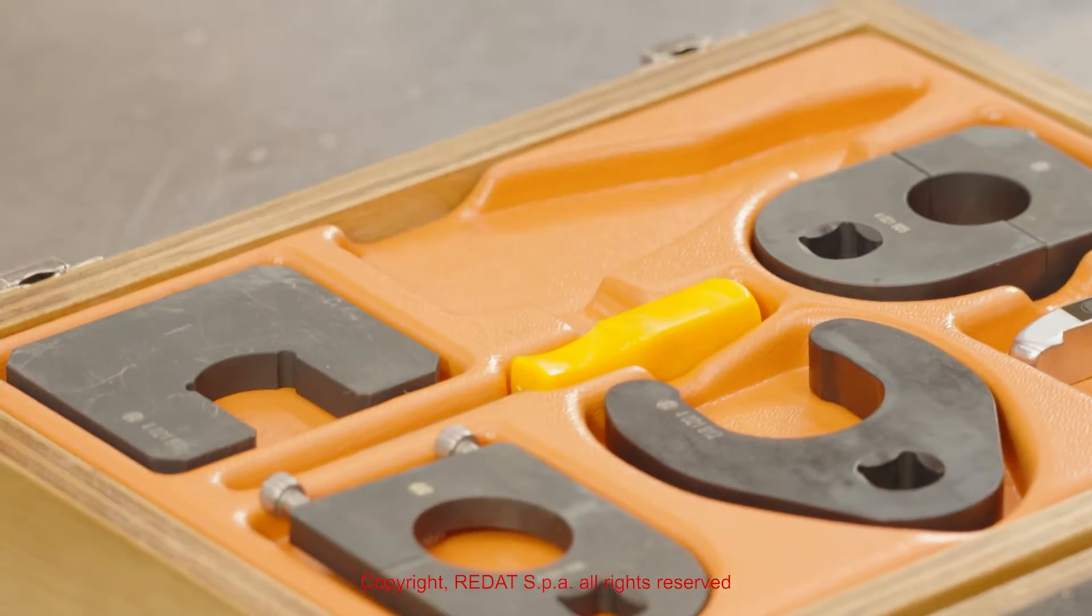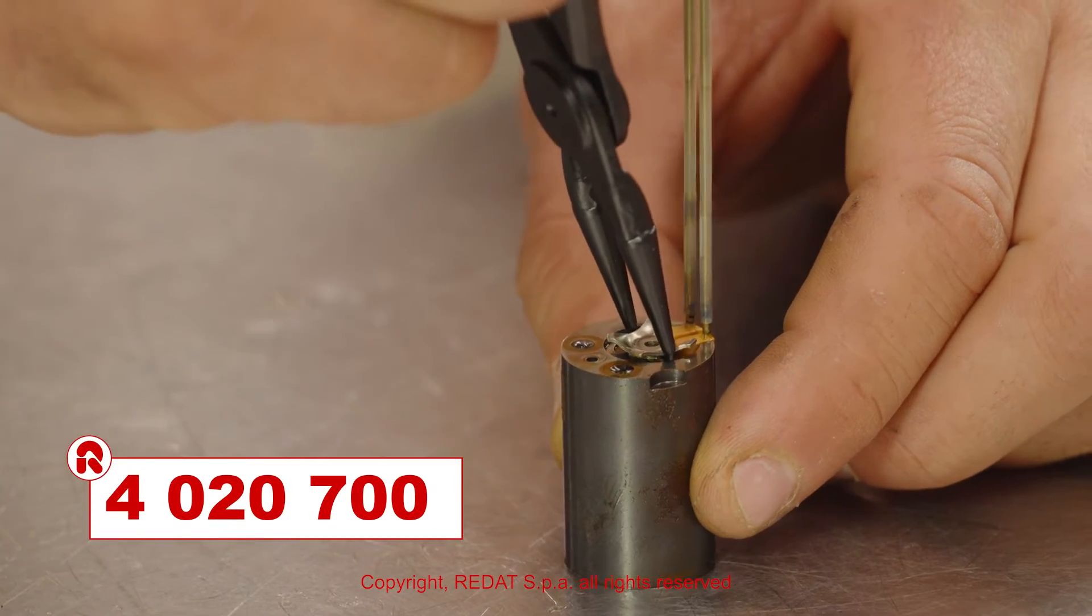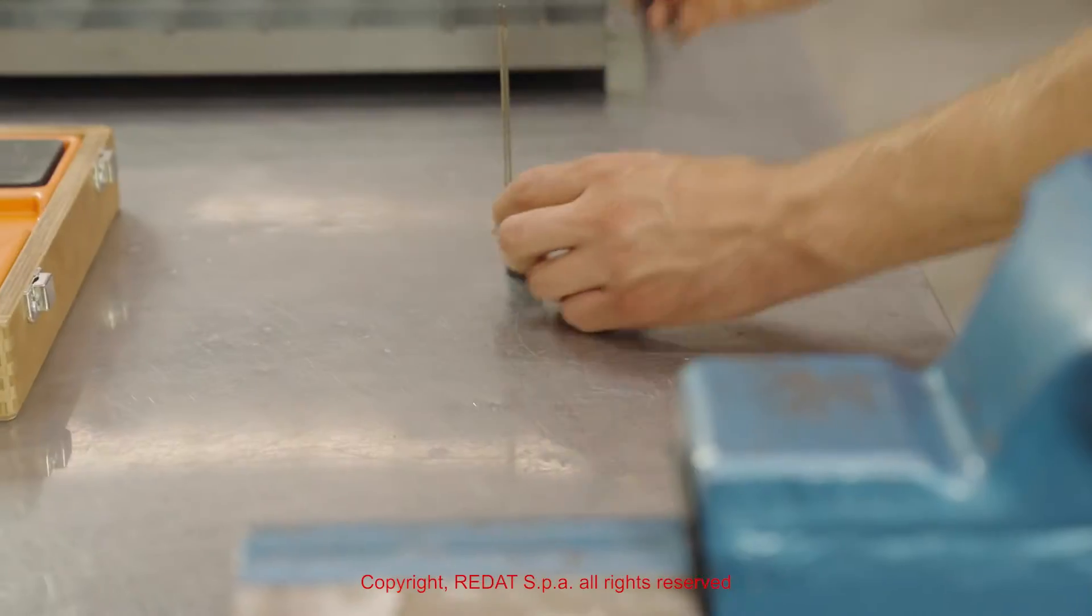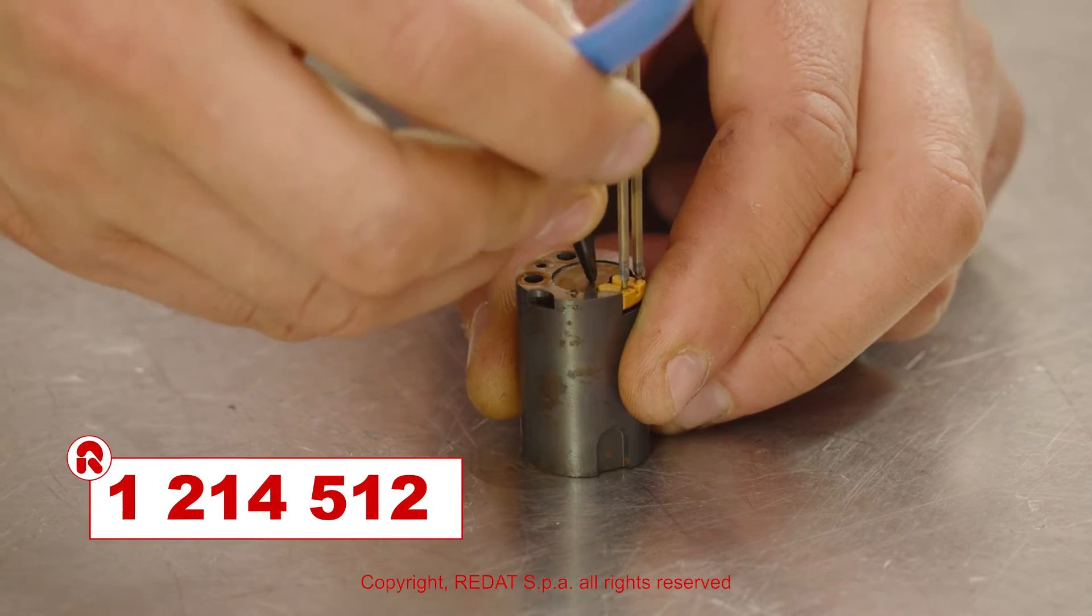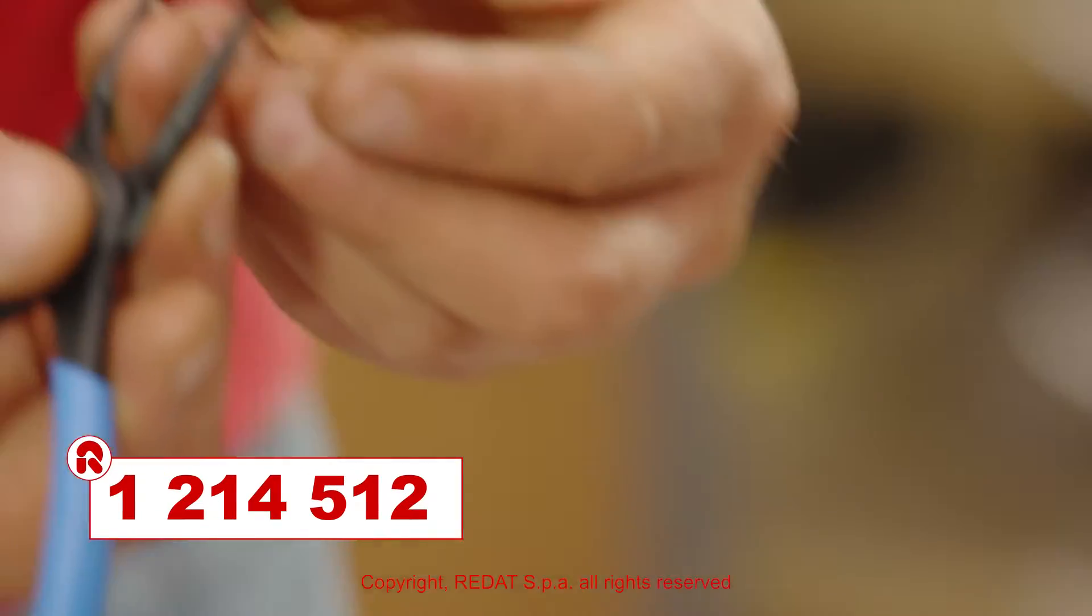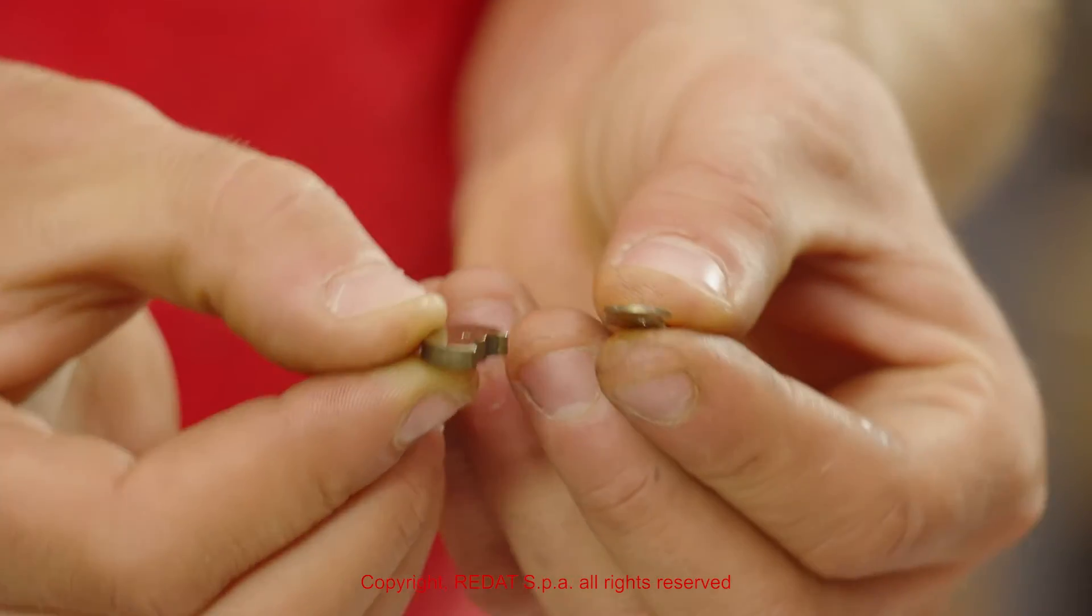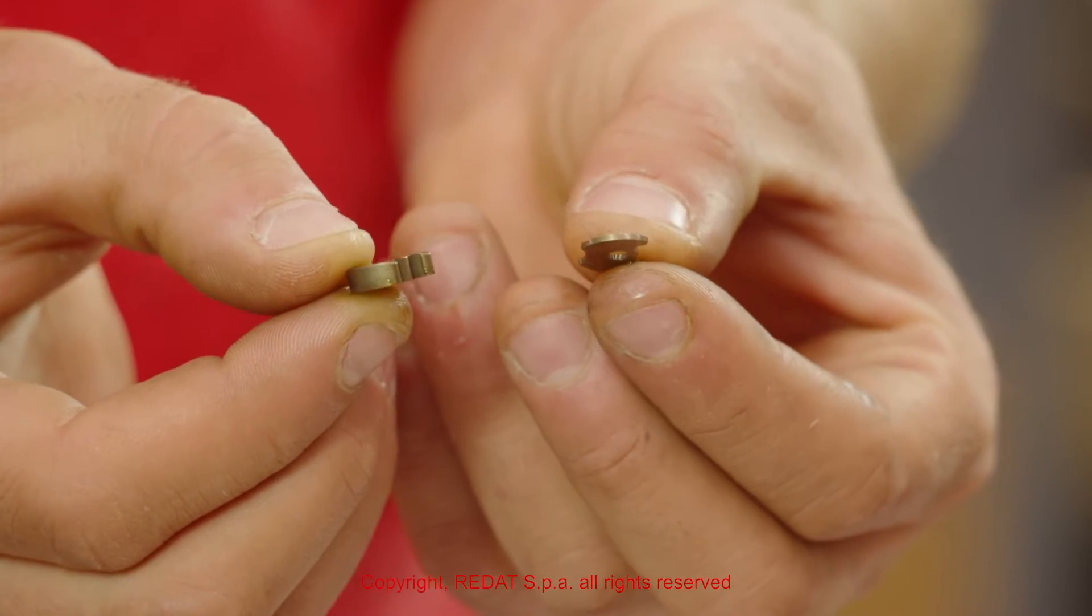Using the pliers 4 0 2 0 7 0 0, we remove the cage 1 2 1 4 5 1 2. It is now possible to remove the components inside the bush.